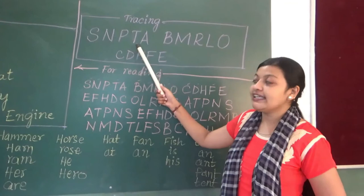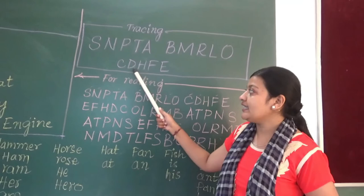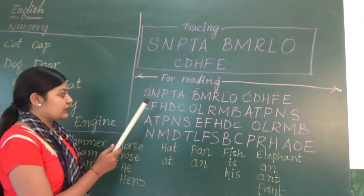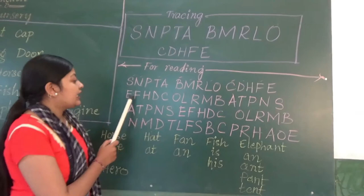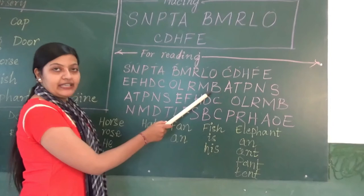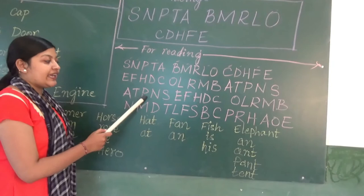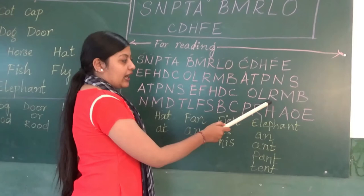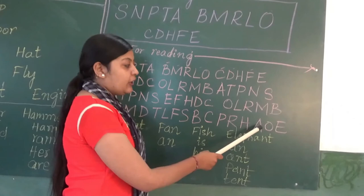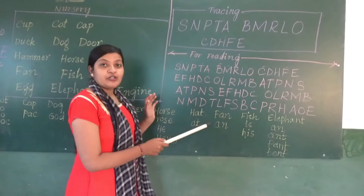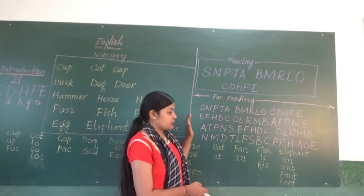You can give your kids letters for tracing: S, N, P, T, A, B, M, R, L, O, C, D, H, F, E. Likewise, for reading practice, you can shuffle the letters — for example: E, F, H, B, C, O, L, R, M, B, A, T, P, N, S — so that you can identify whether your kids are correctly identifying the letters of the alphabet.